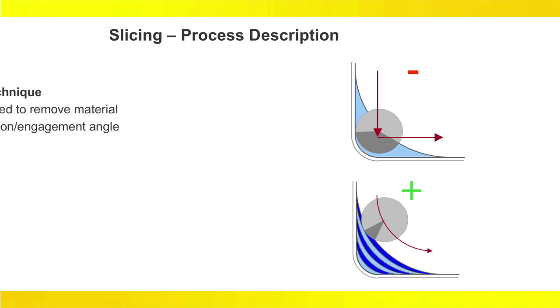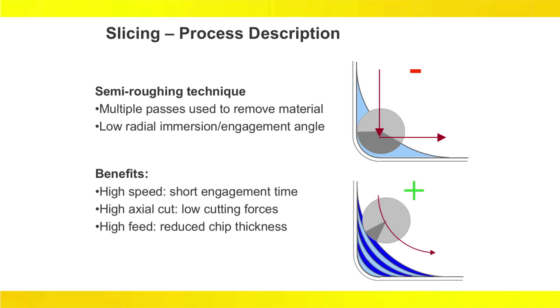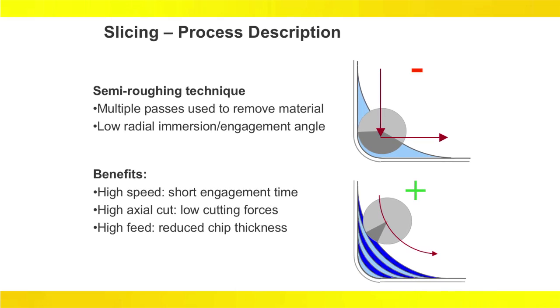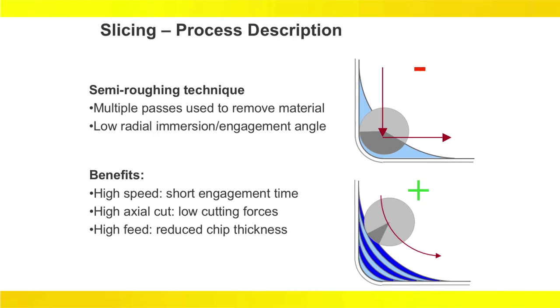Slicing Corners uses high-speed machining techniques to break up a corner into low radial engagement passes, allowing for high speed, feed, and axial cuts due to the low cutting forces and reduced chip thickness.